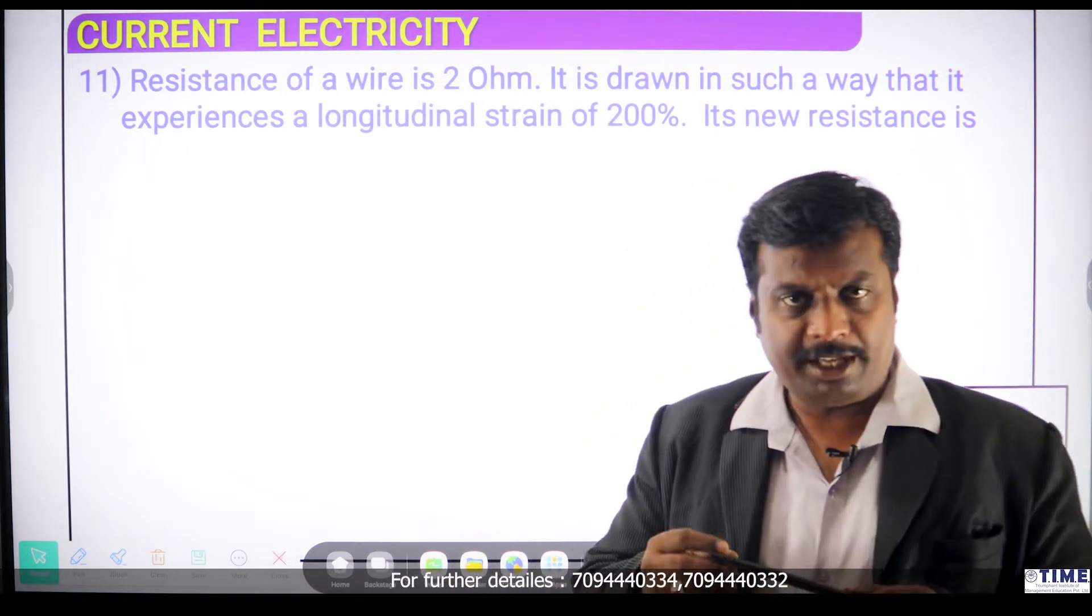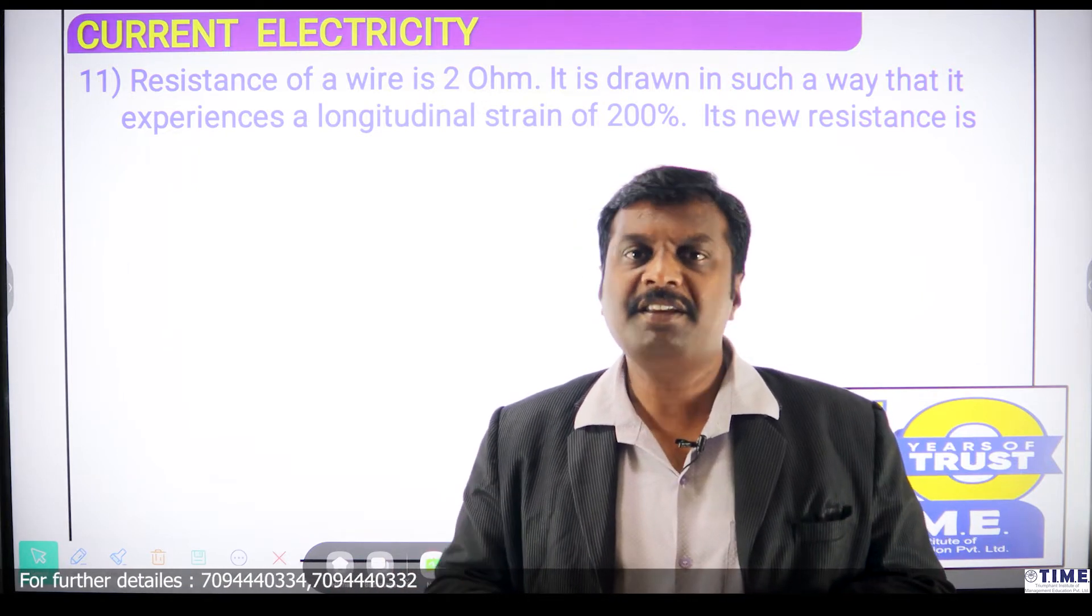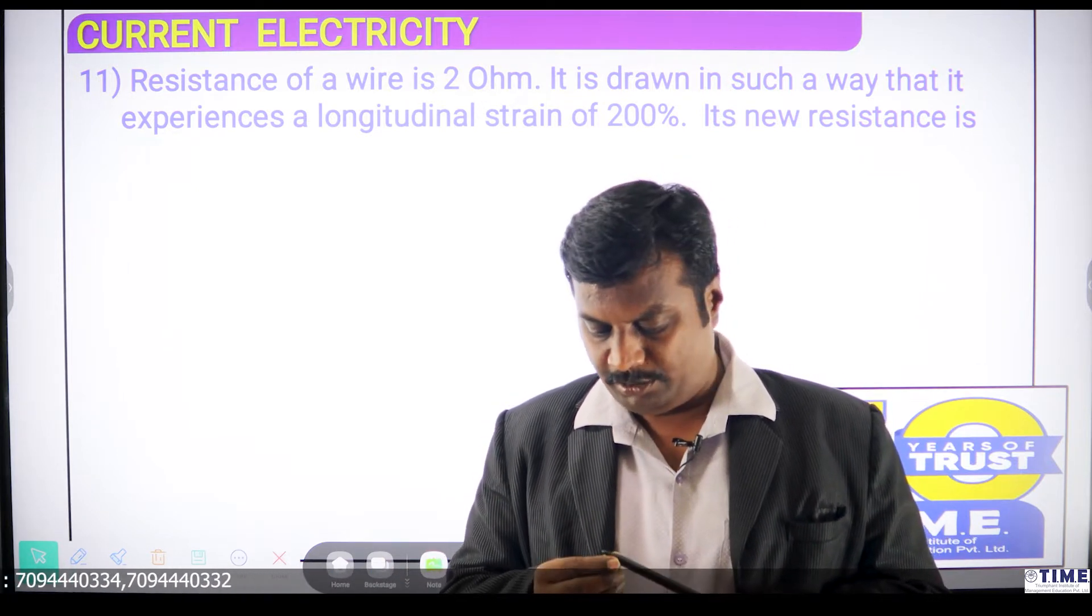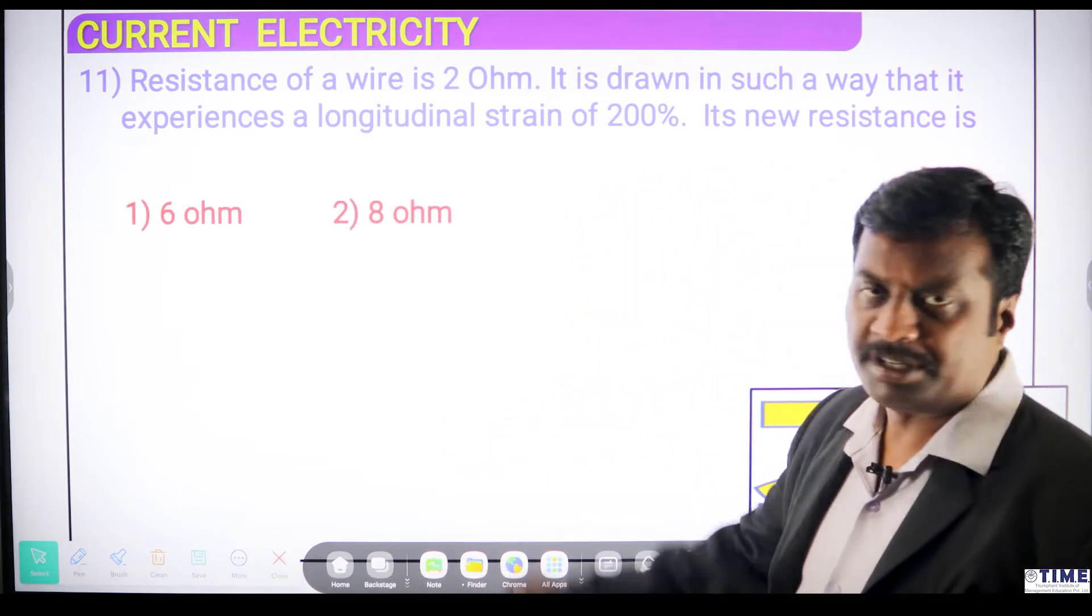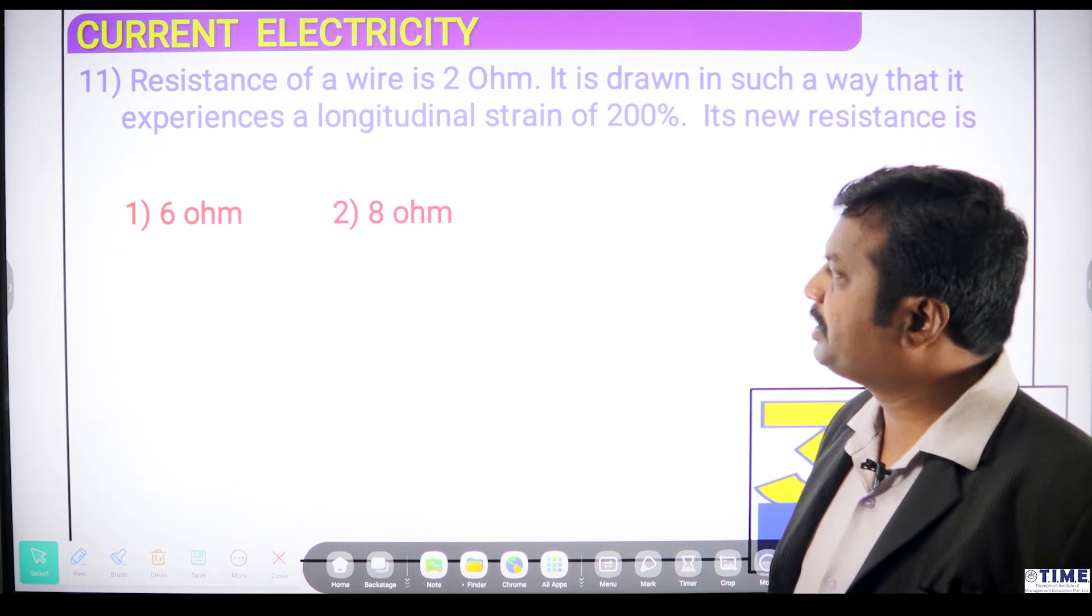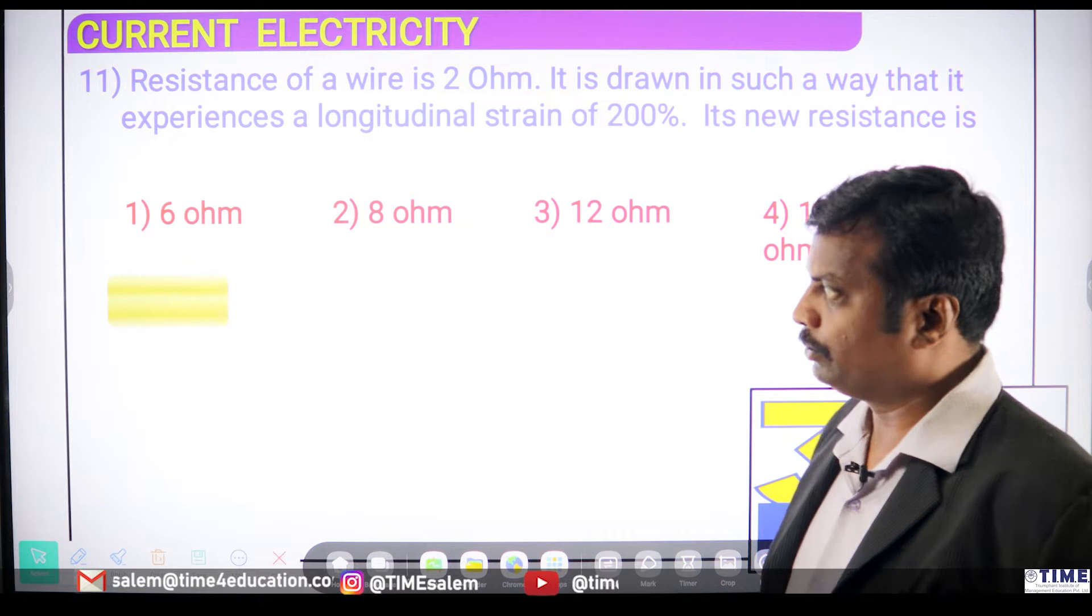Let us assume this as a wire. When we pull it on both the sides, the change in length is 200 percent. The length has changed by 200 percent. Let us see what happens. What are the options? First option is 6 ohm, second option is 8 ohm and third is 12 ohm and you have got 18 ohm also.